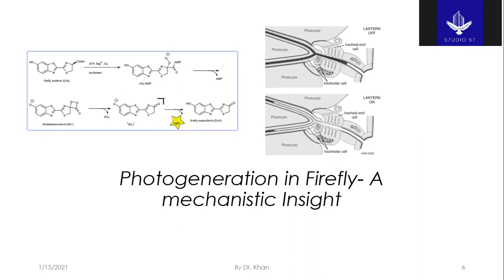The strong and versatile exoskeleton that covers all surfaces interfacing with the environment enables the respiratory system to transfer oxygen to photocytes. As oxygen gushes into a photocyte through the tracheal passage, the lantern turns on. The firefly has its final nerve synapses close to the tracheal passage rather than in the proximity of a photocyte.